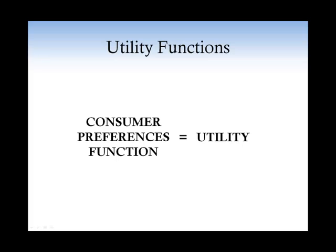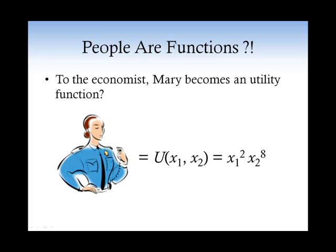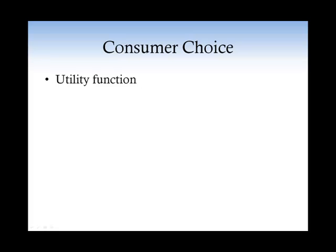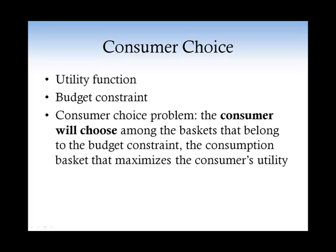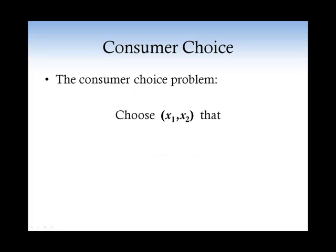There is nothing mysterious about the utility function — it is just a way to represent consumer preferences. If we know the utility function of a consumer and we know her budget constraint, then we can write the consumer choice problem in a useful manner. The consumer will choose the consumption basket that maximizes her utility function among the baskets that satisfy her budget constraint. That is, the consumer chooses the basket (x1, x2) that maximizes the utility function subject to the budget constraint.